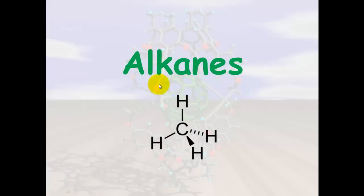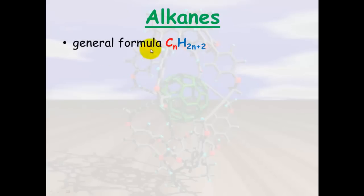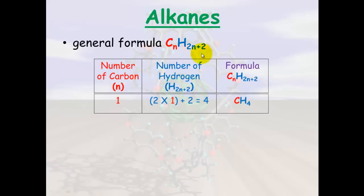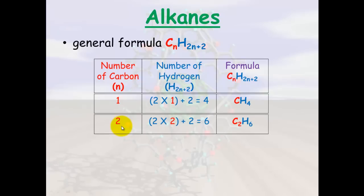I'm going to talk firstly about alkanes. Alkanes have the general formula CnH2n+2. That means if we know the number of carbon atoms we can calculate the number of hydrogen atoms, and alkanes will always fit this formula. So if we've got one carbon atom, we put n=1 into 2n+2: that's 2 times 1 plus 2 equals 4 hydrogens, giving us CH4, which is methane. If we've got 2 carbons, it becomes 2 times 2 plus 2 equals 6, so it's C2H6.